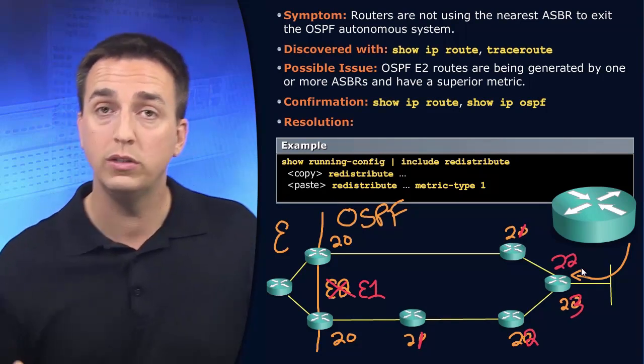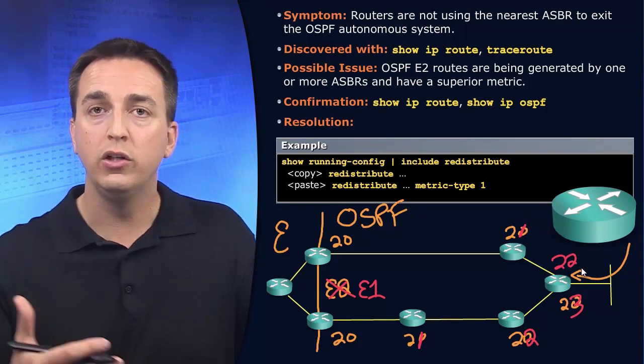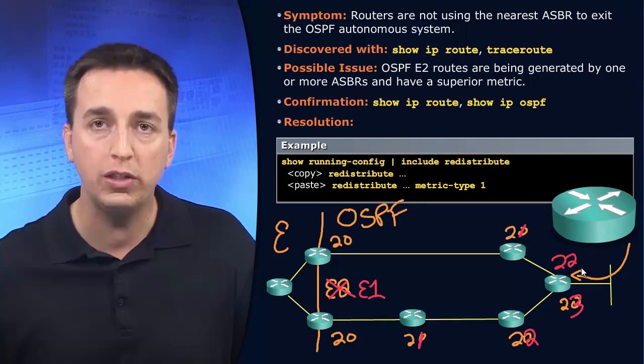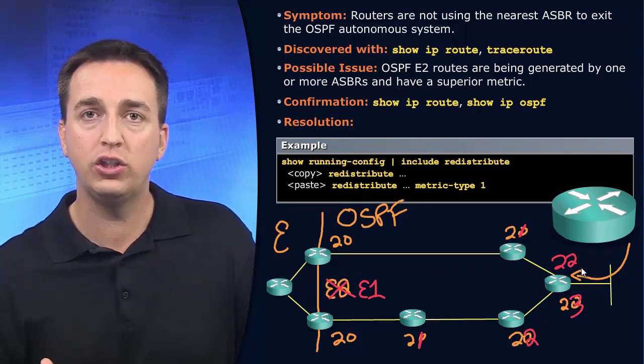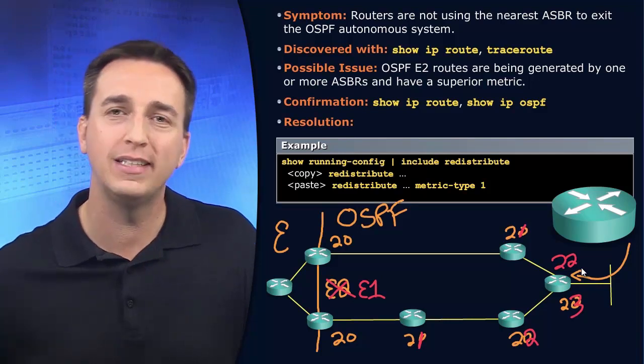So which path is going to be chosen? The path with the lowest cumulative metric to reach that particular destination network.